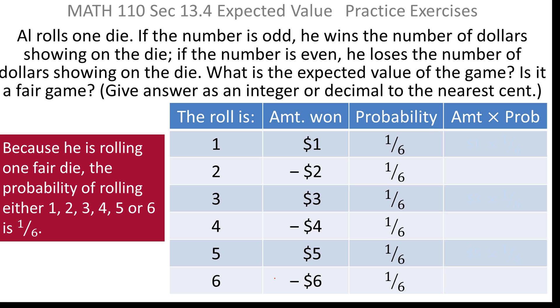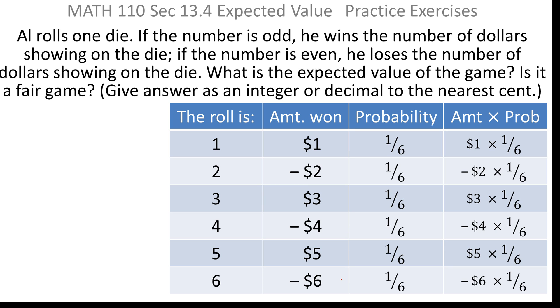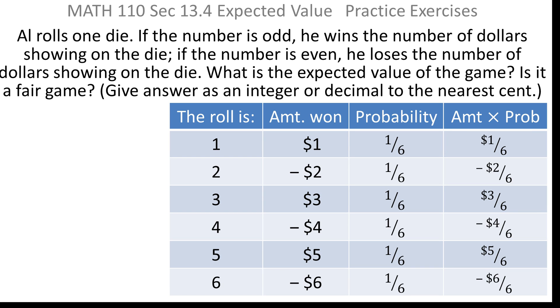So they're all a probability of one-sixth. To calculate the expected value, you simply take the amount and multiply it by the probability. So you take one dollar times one-sixth, and so on. Just remember that the odd products are positive, and the even products are negative.